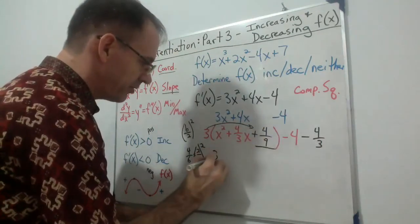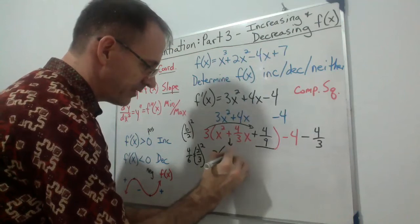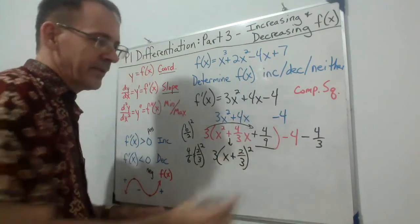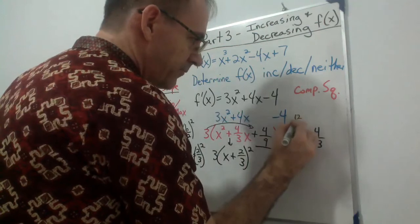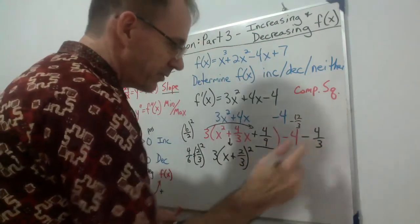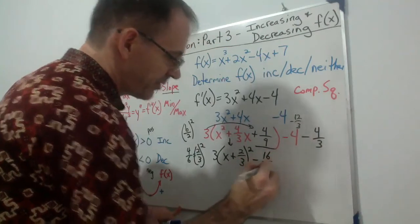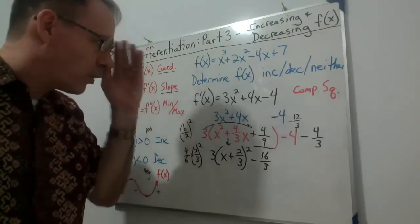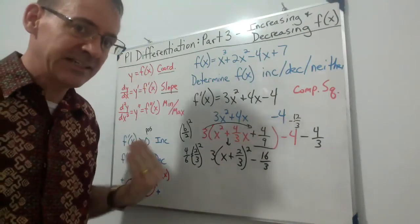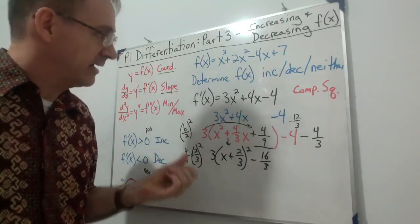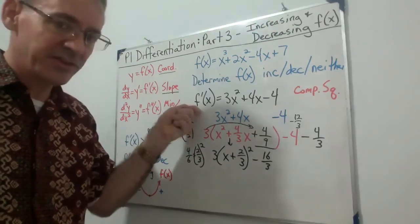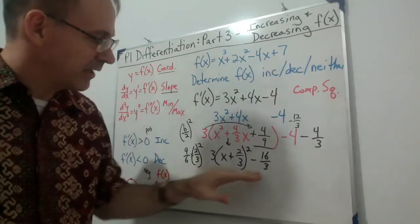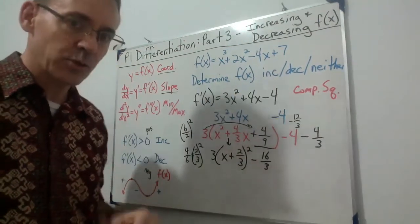This gives us 3(x + 2/3)² − 12/3 − 4/3 = 3(x + 2/3)² − 16/3. Now we can interpret what's going on. This is the slope (first derivative) in completed-square form, and we don't have the inequality provided, so we need this different form to interpret it.